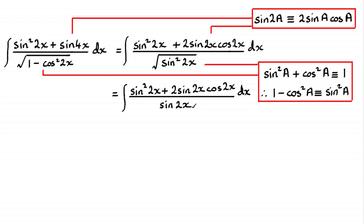Now, do you notice that I can divide both top and bottom by sine 2x, or take sine 2x out as a common factor and then divide through? Either way, I'm going to get this result: the integral of sine 2x plus 2 cos 2x, the sine 2x is cancelling.